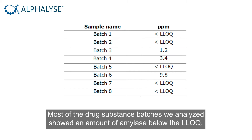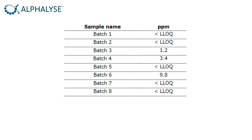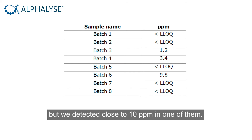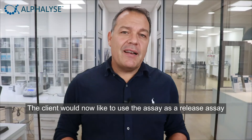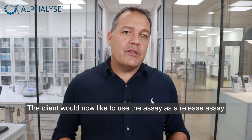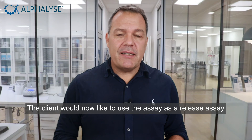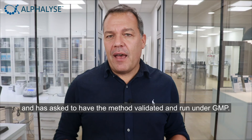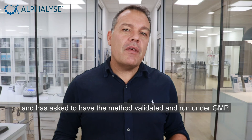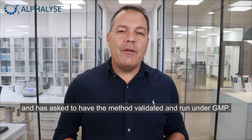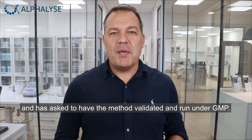Most of the drug substance batches we analyzed showed an amount of amylase below LLOQ, but we did detect close to 10 ppm in one of them. The client would now like to use this assay as a release assay and has asked to have the method validated and run under GMP.